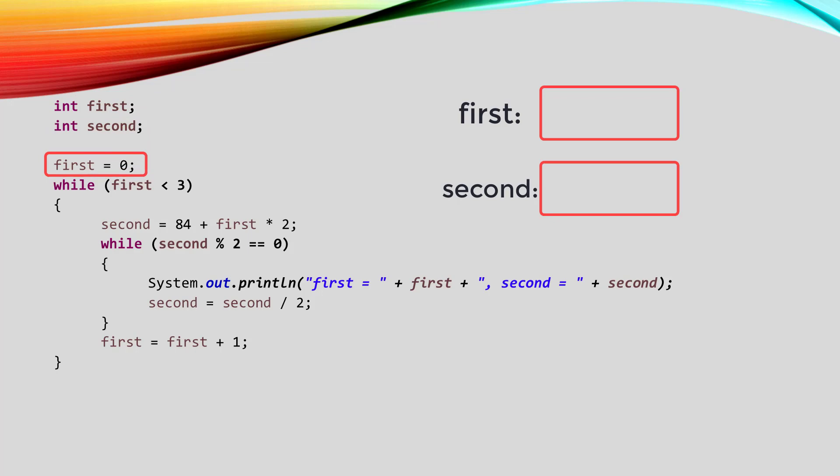Then this statement gives first the value of zero. So the while loop will start by comparing first to three, and since first is less than three, we do the stuff in the while loop. This statement is an assignment statement. It will evaluate the right-hand side and store it at the left-hand side. First is zero, times two is zero, and add that to 84 gives us a value of 84, and that will be stored in second.